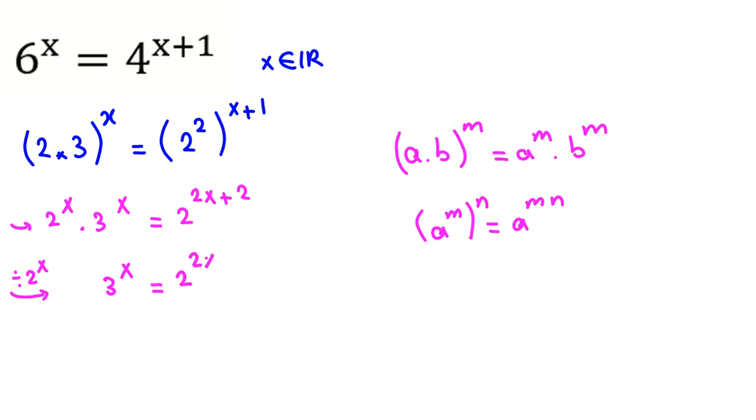It will be 2 to the 2x plus 2 over 2 to the x. Another rule is a to the m over a to the n equals a to the m minus n. So here, if we subtract 2x plus 2 minus x, it will be 2 to the x plus 2.